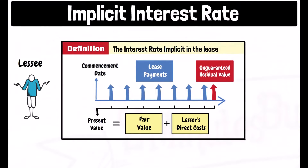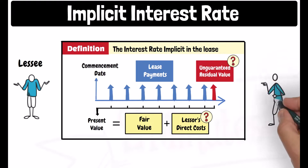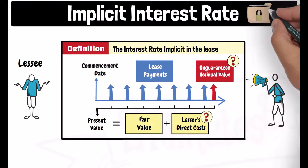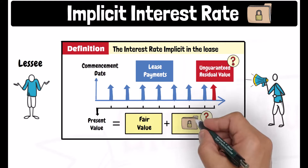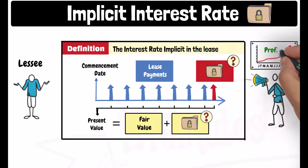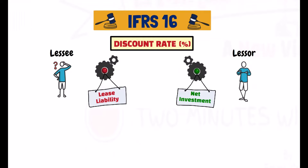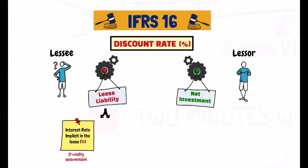In reality, that calculation cannot be done by the lessee, as he does not have access to some of the key data needed for that calculation, like for example the unguaranteed residual value and the lessor's initial direct costs. And of course for commercial reasons, lessors would never disclose that rate or the data used to build it, as that will reveal how much profit they are making from the lease transaction. For this reason, the standard requires the lessees to use the interest rate implicit in the lease only if it is readily determinable.